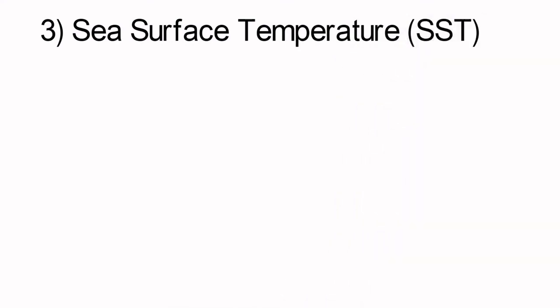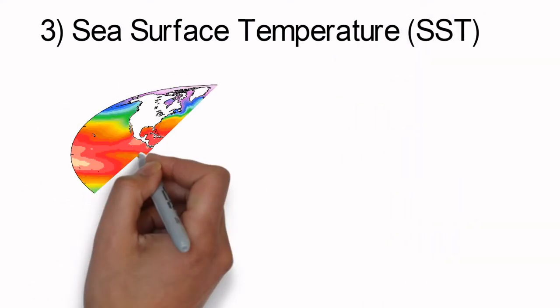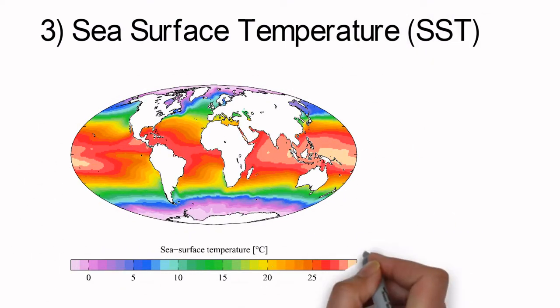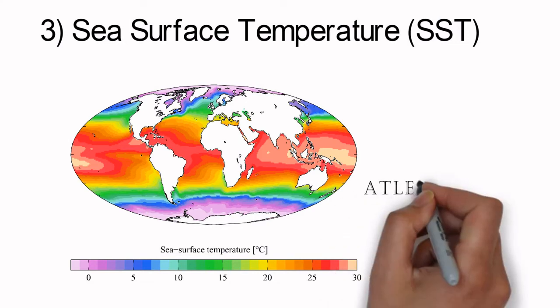Third, sea surface temperature. The sea surface temperature should be around 26.5 degrees Celsius at least. More than that is well and good for the system to develop, and it should be 26.5 degrees Celsius at the depth of 50 meters.